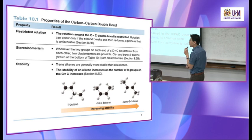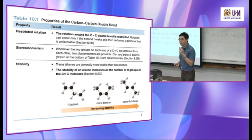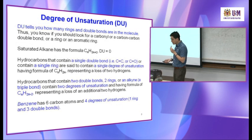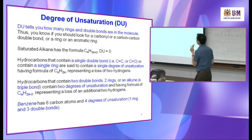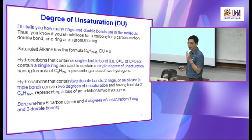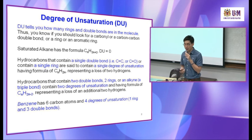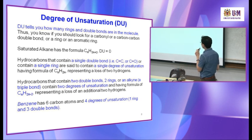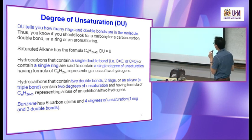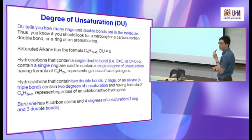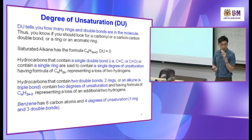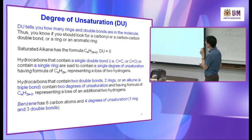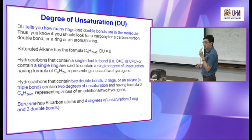Let's see naming examples. Find the longest carbon chain — 1, 2, 3, 4, 5, 6, 7 — so the parent is heptyne. The triple bond is at position 3, so it is 3-heptyne.